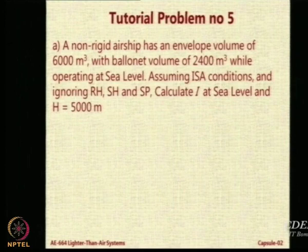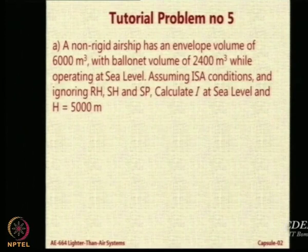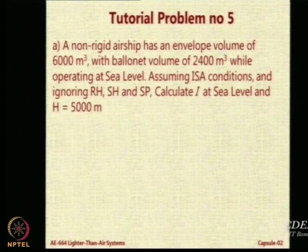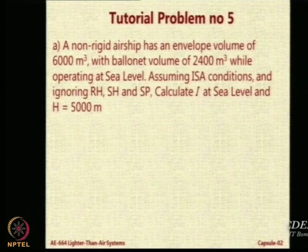Now, what happens to I at h equal to 5000 meters? It should be 1, but let us confirm it. We have just seen that graph where for sea level condition I equal to 0.6, it goes to 1.0. Please reconfirm this — you may get 0.999 or 0.998, but reconfirm it. How do you confirm this? You have that formula I2 by I1.